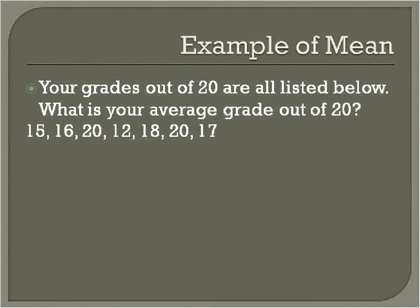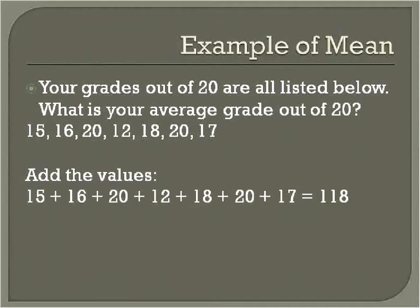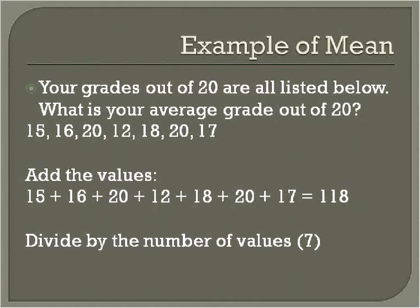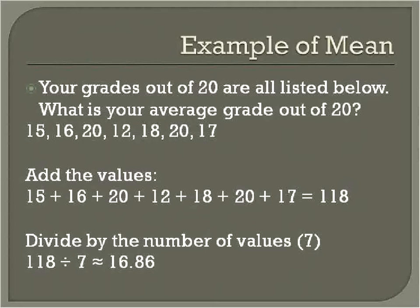Let's look at another example. Let's say you have grades out of 20, listed as 15, 16, 20, 12, 18, 20, and 17, and you want to know your average grade — you're finding the mean. We add up all of these values: 15, 16, 20, 12, 18, 20, 17. We add them all together and get 118. Now we divide by the total number of values. We count them: 1, 2, 3, 4, 5, 6, and 7. So there are 7 values. 118 divided by 7 gives a result of about 16.86 — that's about your average grade out of 20 on these assignments.